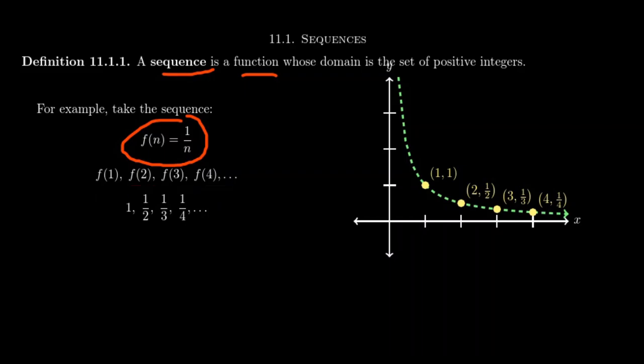Now if we evaluate f of 1, we plug it into the function here. We put 1 in for the n, we get 1 over 1, which is 1. So f of 1 would equal 1. And as 1 is the first number in the domain, we think of 1 as the first number in the sequence.